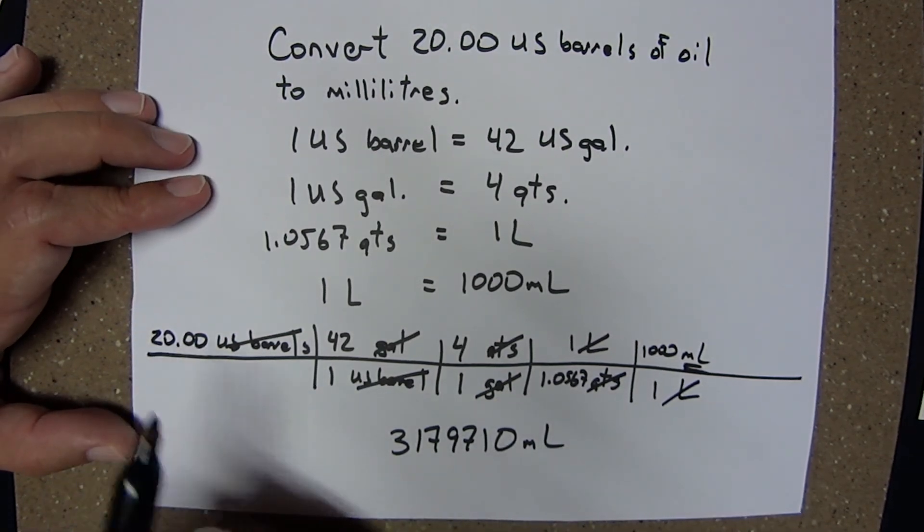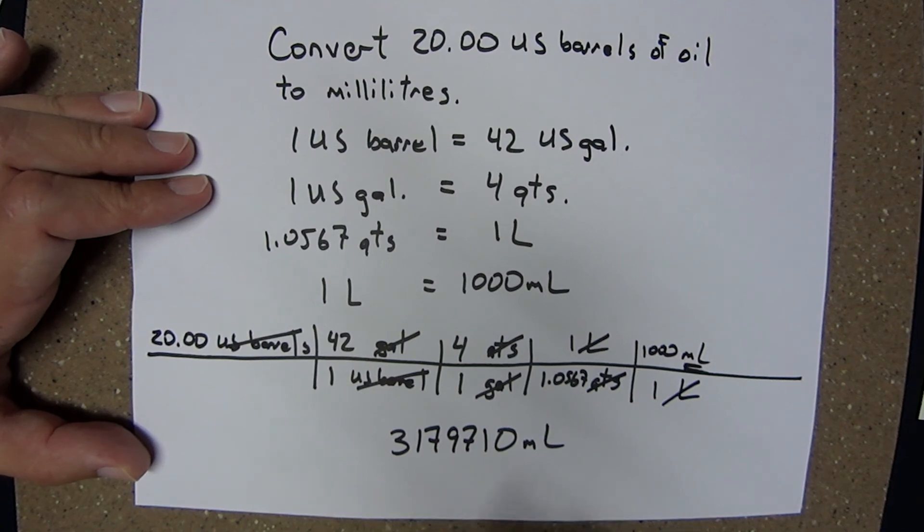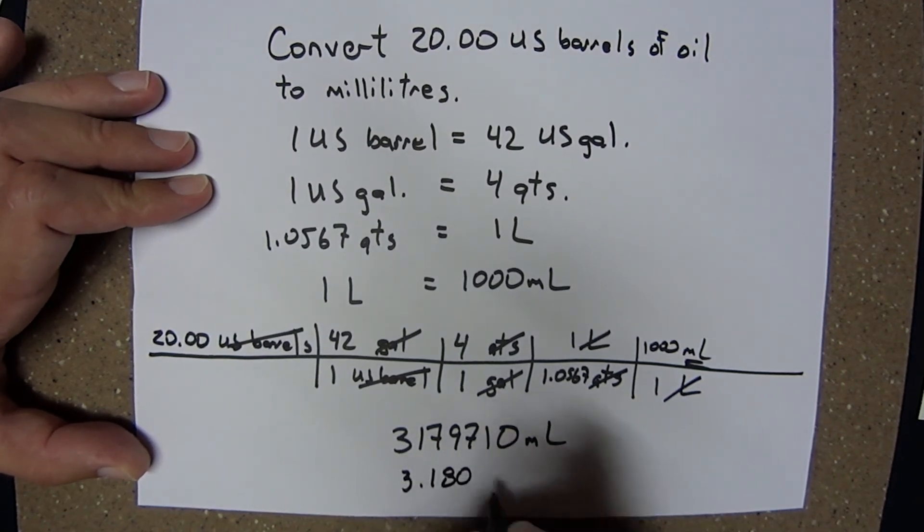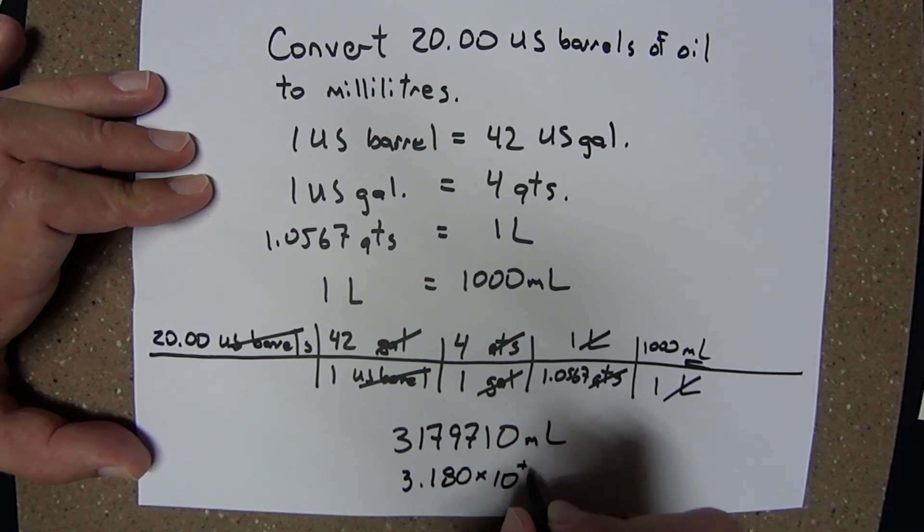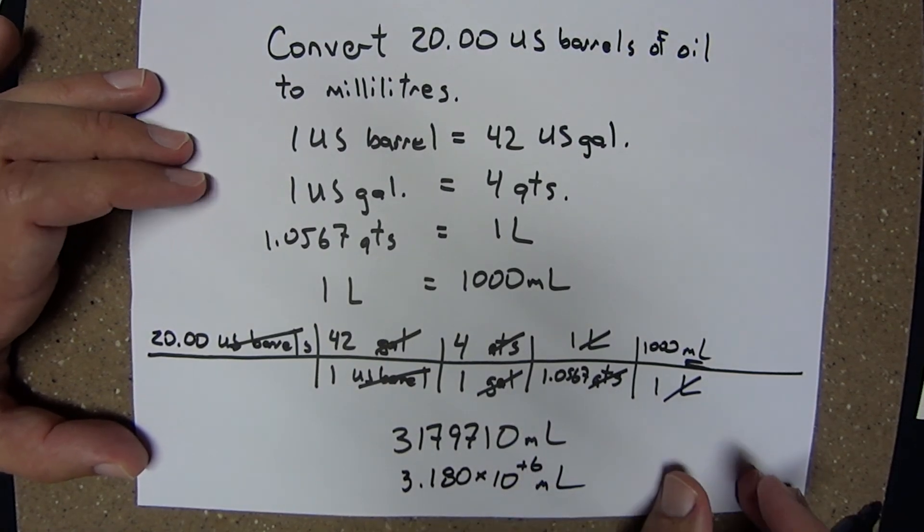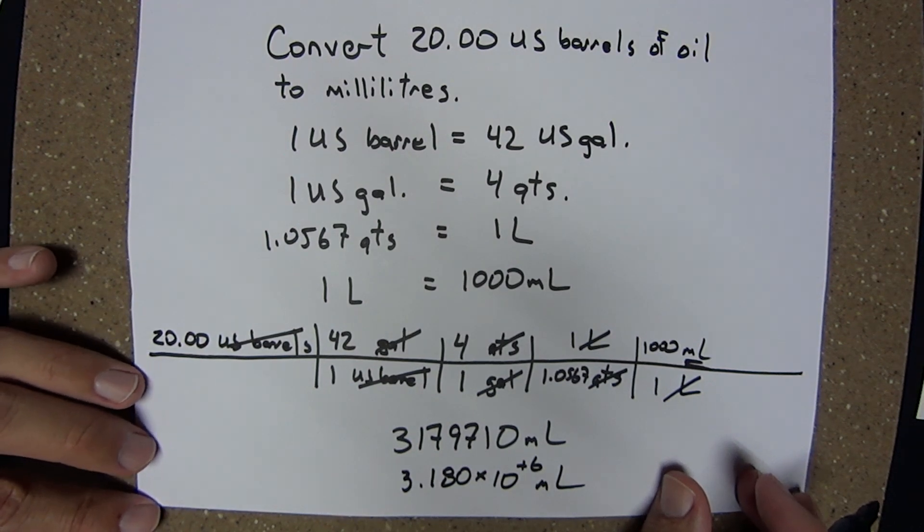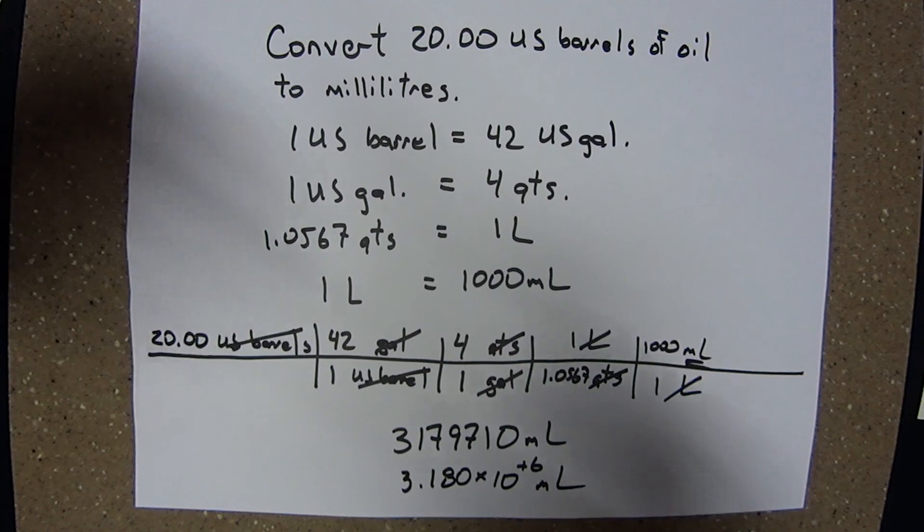Here I'm justified in keeping only four significant figures. I could express this to four significant figures as 3.180 times 10 to the plus 6 milliliters. So master dimensional analysis by completing the exercises associated with module 2.